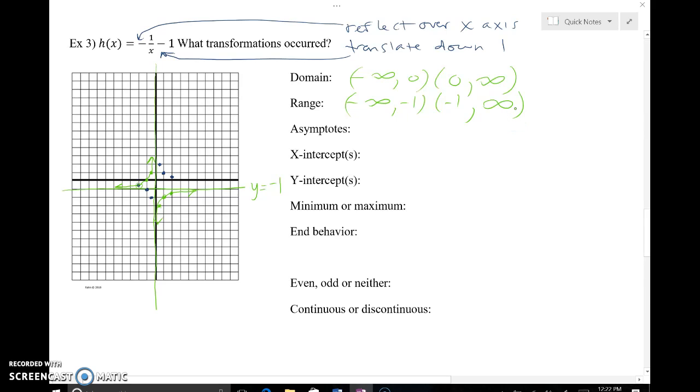We do have two asymptotes this time. We've got y equals negative one for our horizontal asymptote, and we still have x equals zero, the y-axis, as our vertical asymptote. This time actually we have an x-intercept right here. We do cross the x-axis right there at negative one, zero. We never actually touch the y-intercept, so we don't have a y-intercept. We don't have a maximum or a minimum value as I continue to increase and decrease without bounds.